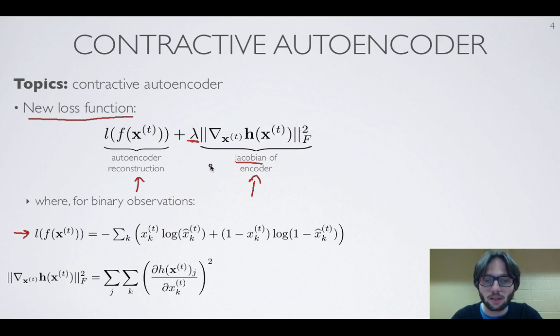So we remember that the Jacobian of a function, so in this case the function is the encoder function, is going to be the matrix of all partial derivatives of all elements of that vector with respect to all elements of the variable with respect to which we're computing the Jacobian, and in this case it's the input vector x.